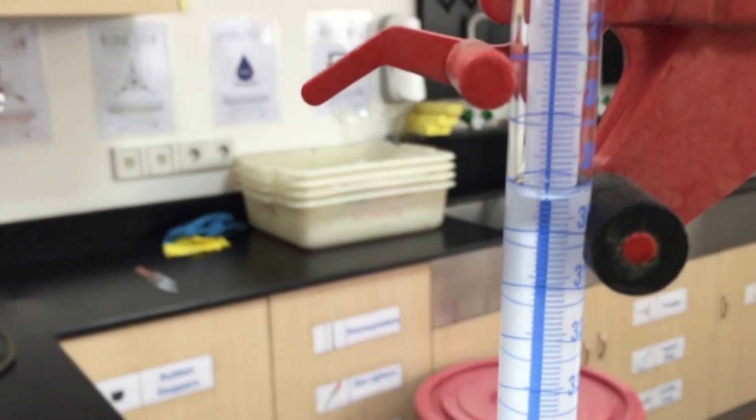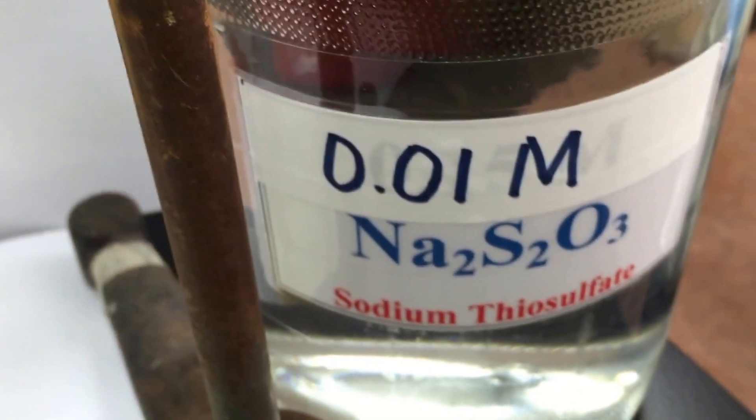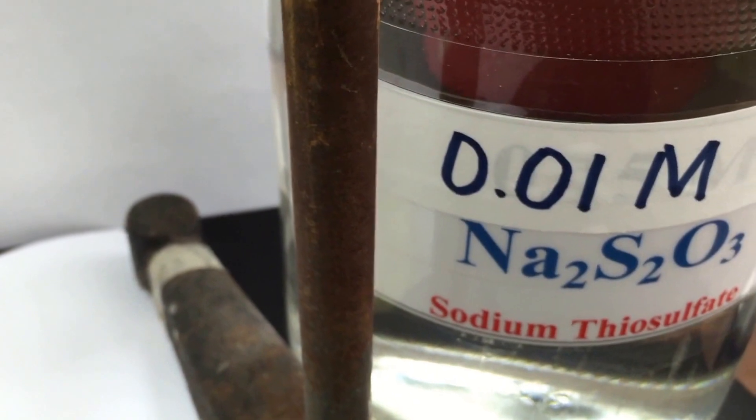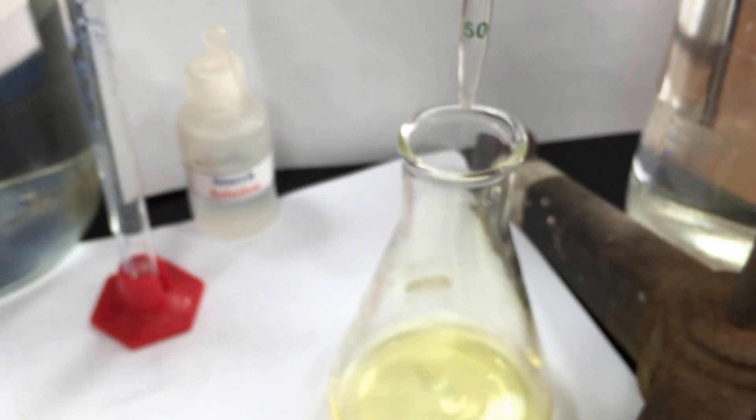So in my burette, I have accurately measured the initial volume, and this is the stock solution, which I used to create a 0.002 moles per liter solution. So I have 0.002 moles per liter standardized solution in the burette, and now we're going to titrate.